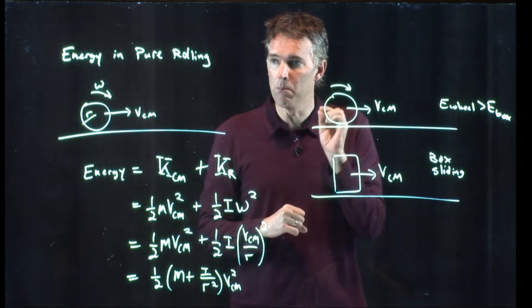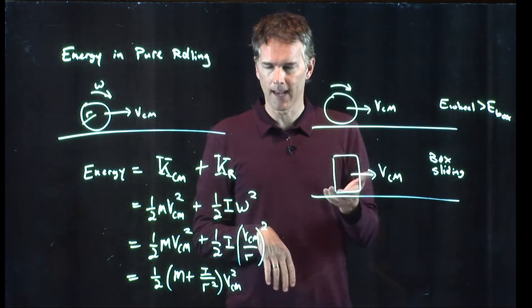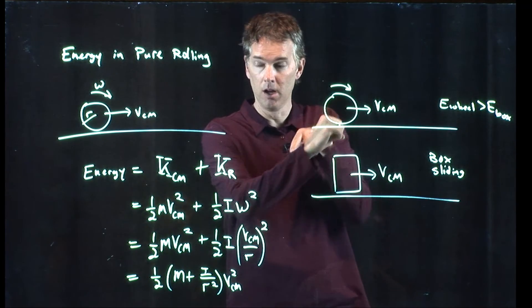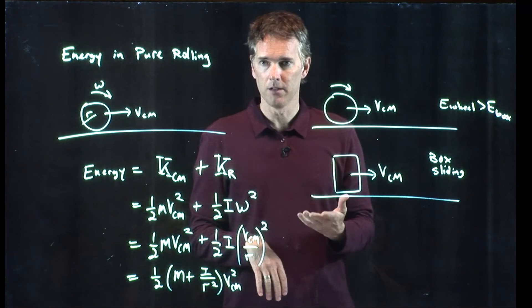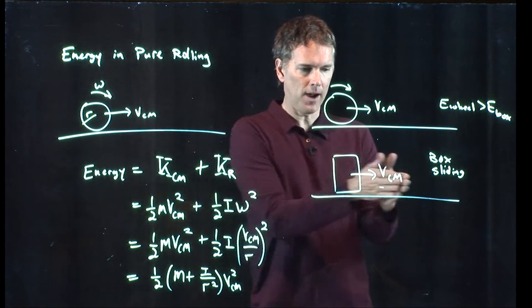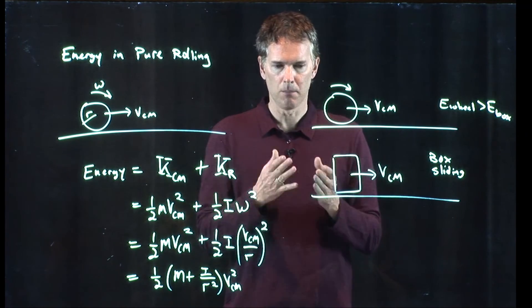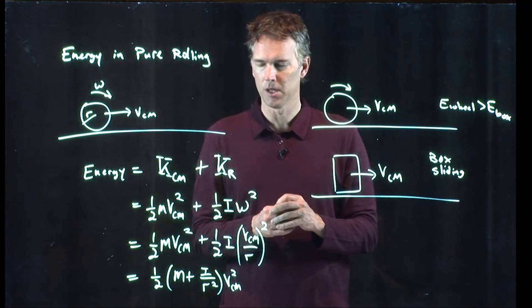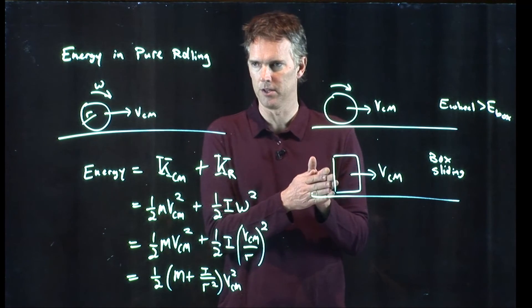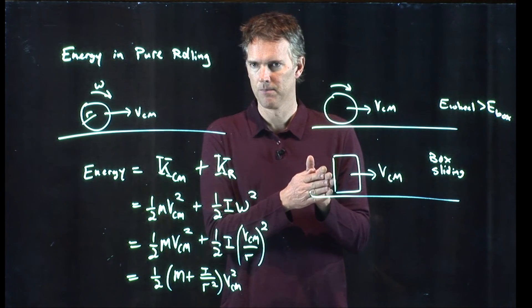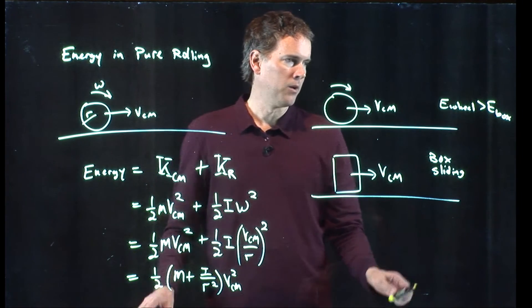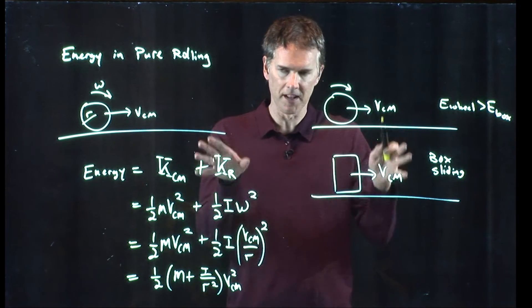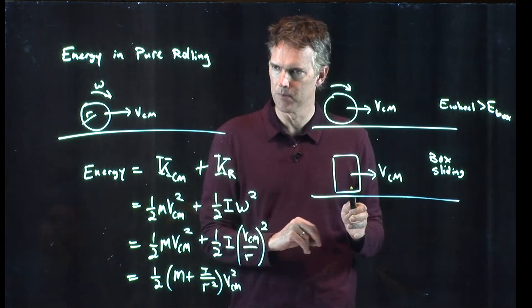Any time you have things that are moving relative to you, they have kinetic energy in them. It doesn't matter if those things in the wheel are rotating in a circle, they still have some speed relative to you. Whereas if you drive along next to the box and you look at it, the box looks stationary. It has zero kinetic energy because nothing is moving relative to you. So that's a nice way to think about this and realize that there has to be more energy in the wheel than in the box if they're the same mass and v_cm is the same in both those cases.